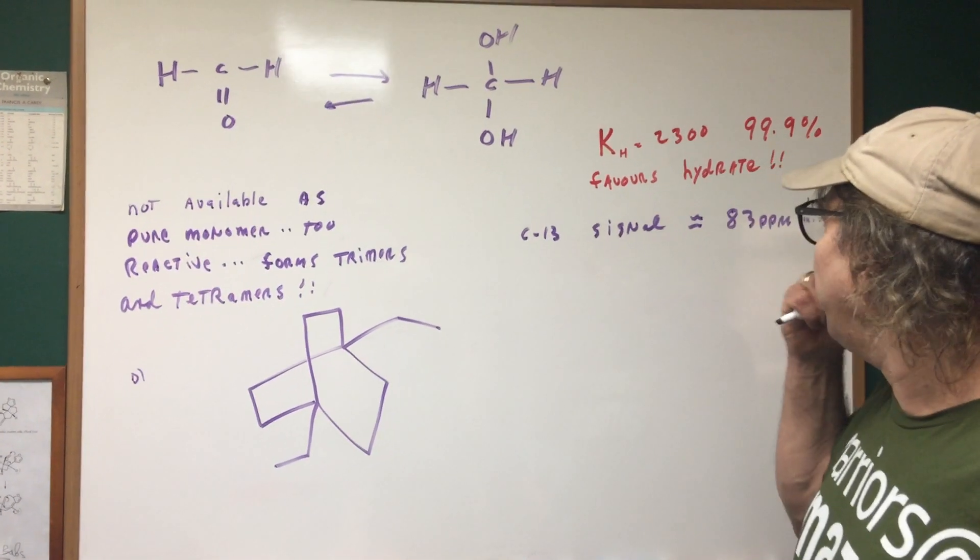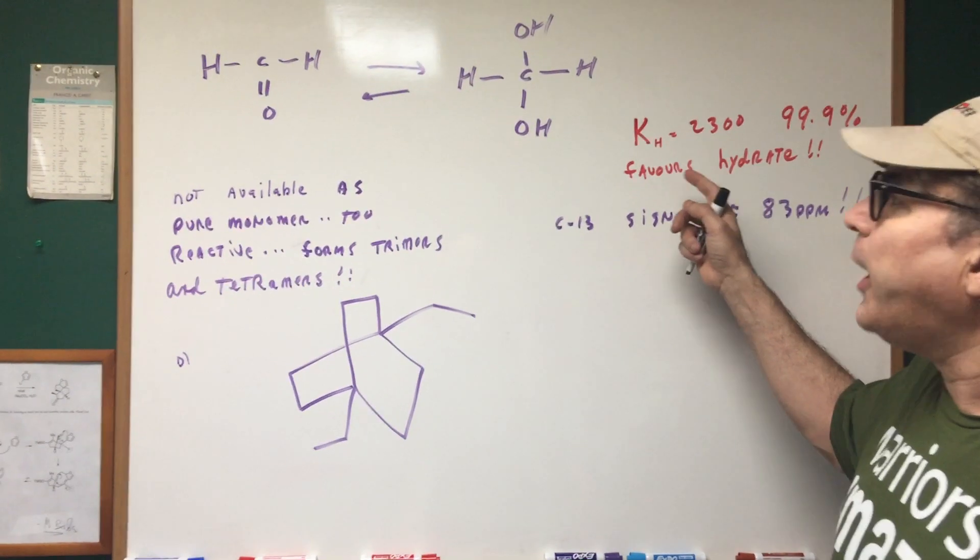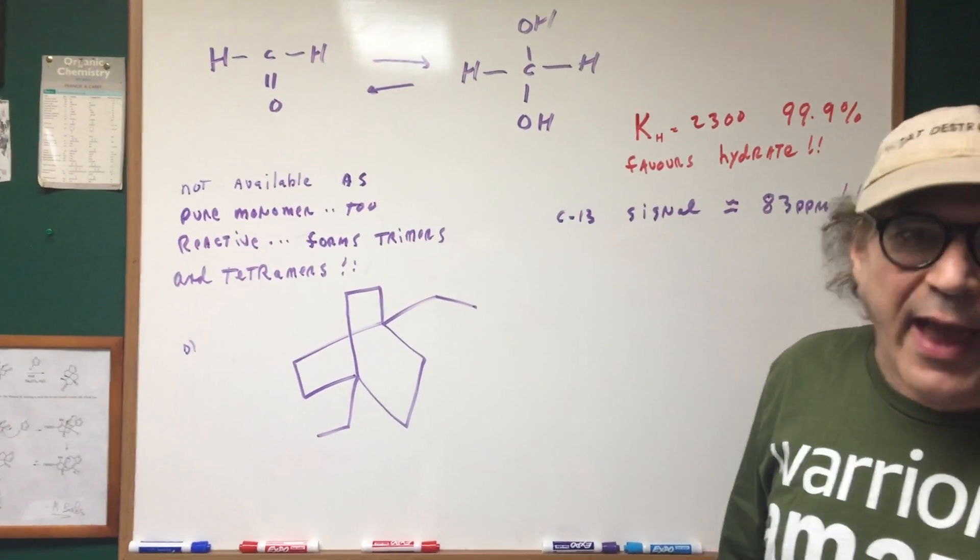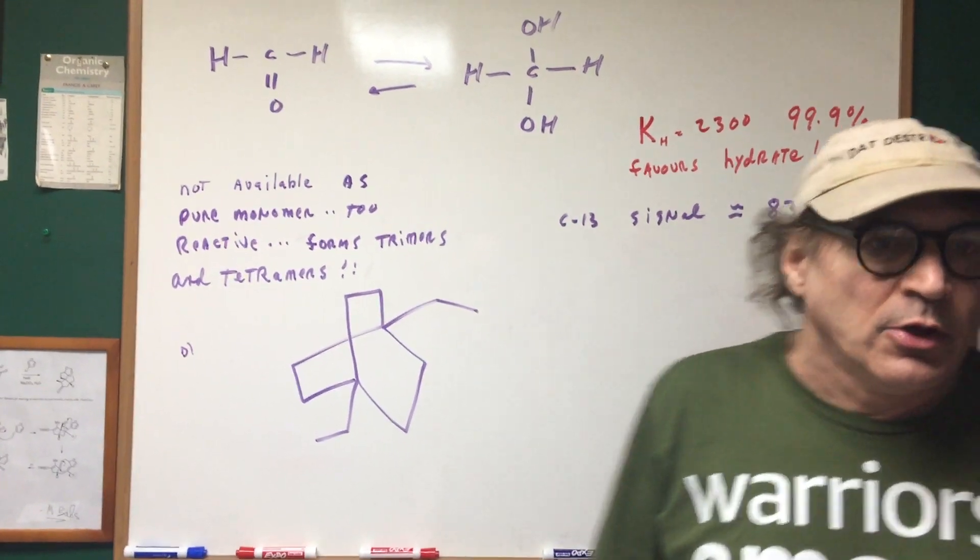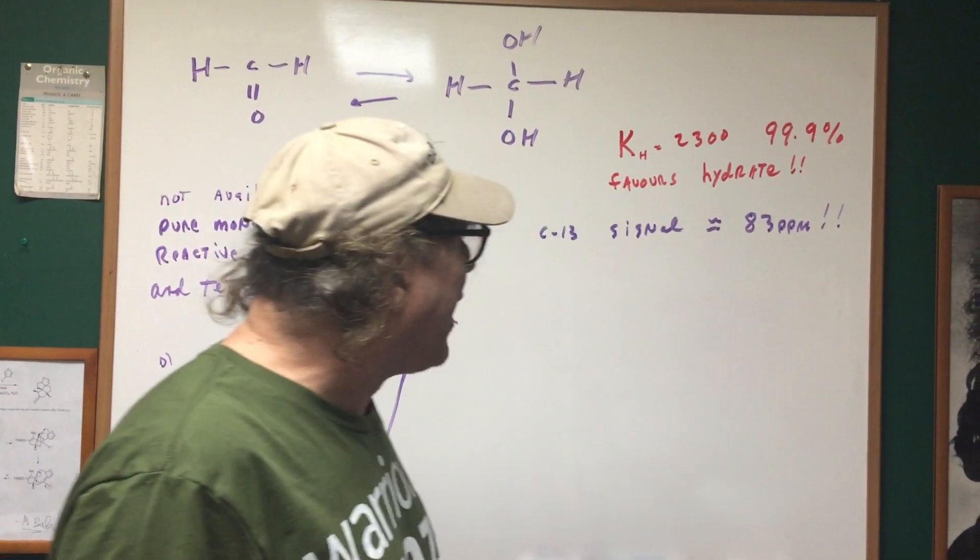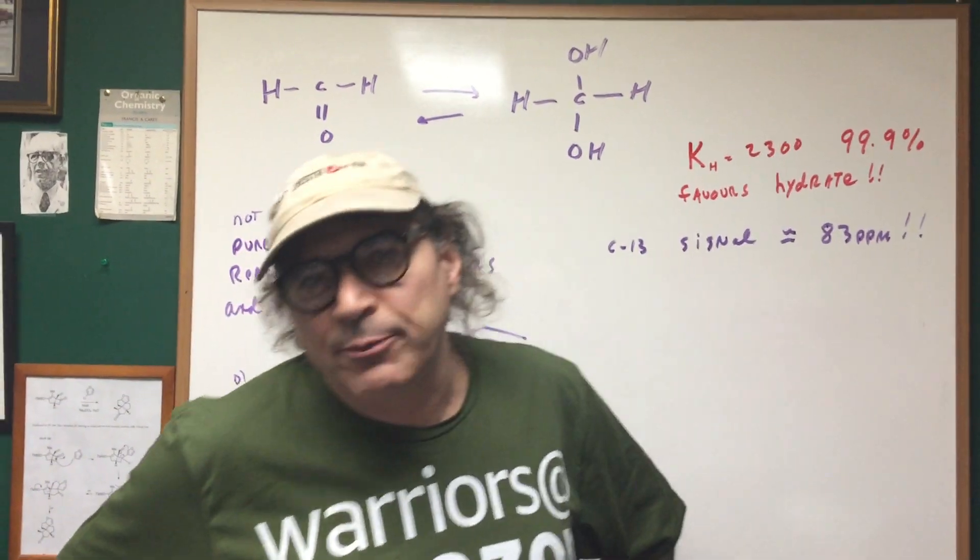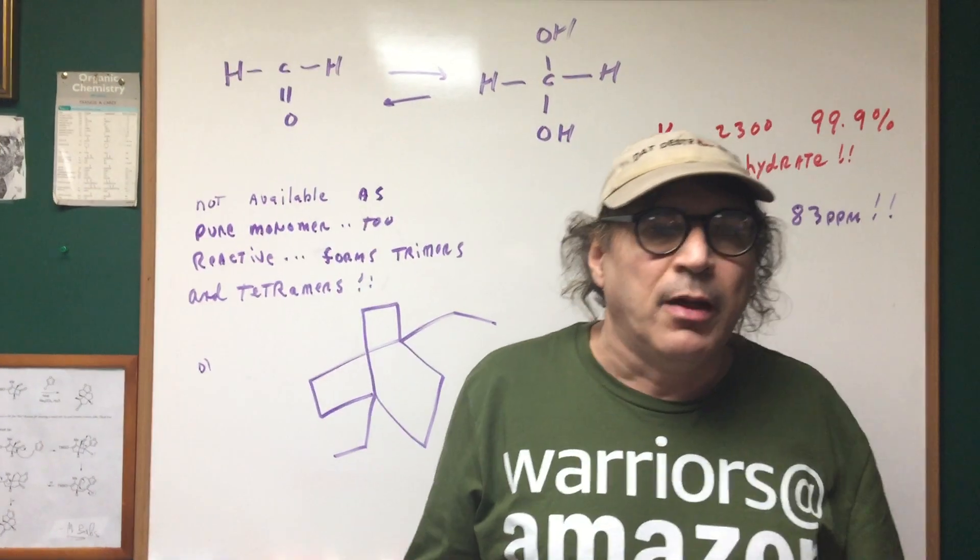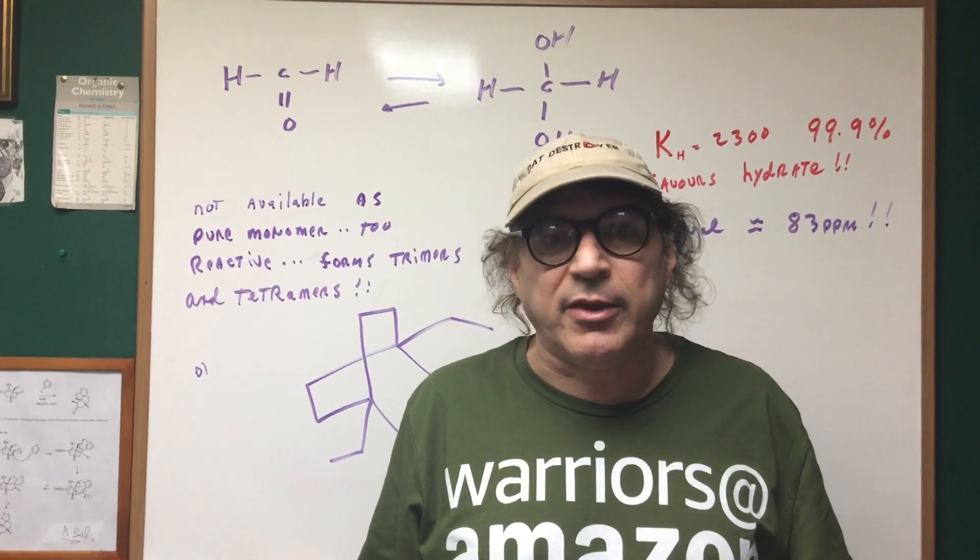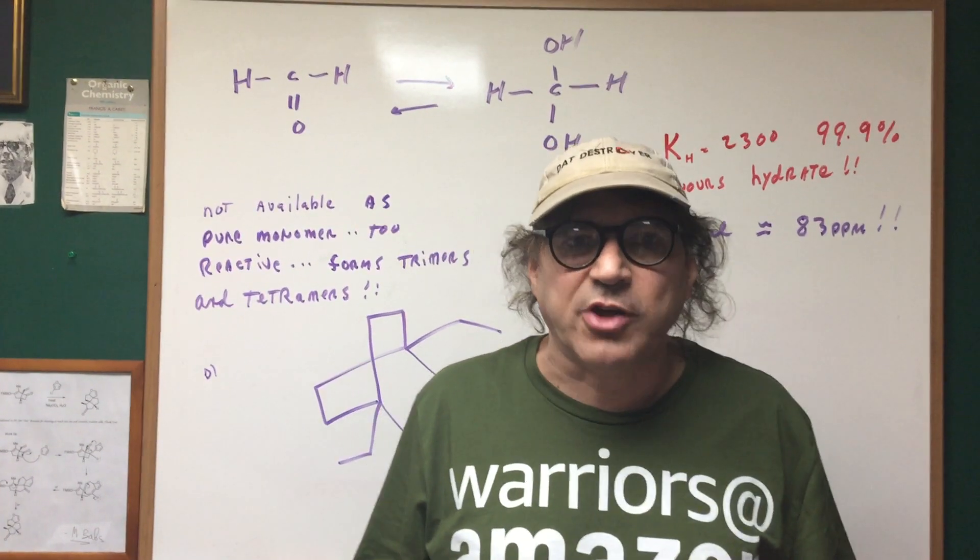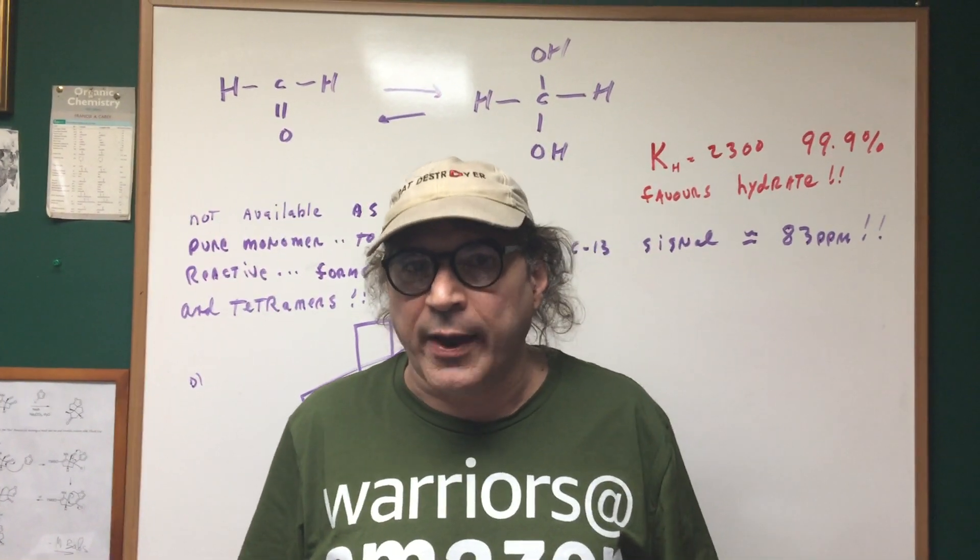All right so what we did here since we're favoring the hydrate that number would not be 180. You would see it downfield but it would be half of that value. So as you can see that value came in around 83 ppms. That's a hard problem and it's a trick problem but it's better to do a trick problem and you gain some strength than I give you some Mickey Mouse question and you thought you understood it and you didn't gain any strength by it.